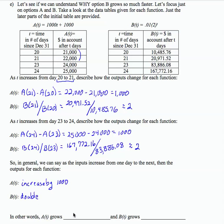So in other words, A of T grows by addition. And remember we said that A of T is a linear function. And B of T grows by multiplication. So we are multiplying by 2, or doubling each time. And this we said was an exponential function. So here you have the defining difference between linear and exponential functions. Linear functions grow by addition. Exponential functions grow by multiplication.